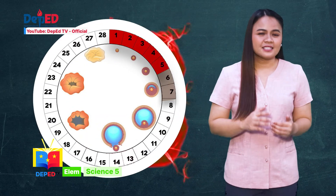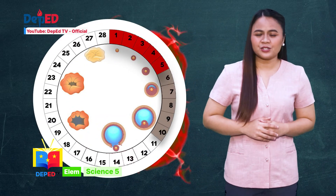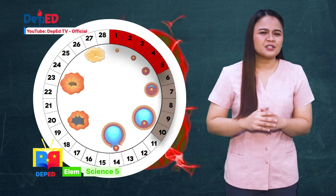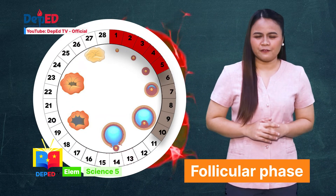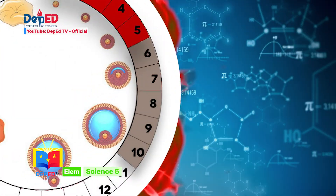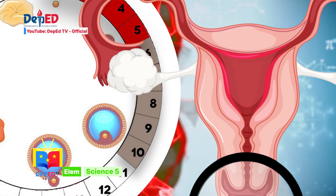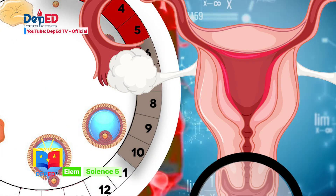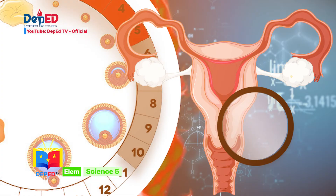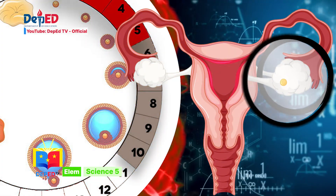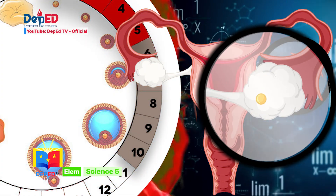Day six to ten is the follicular phase. It is the repair period for the uterine lining and the development period for an egg to mature.